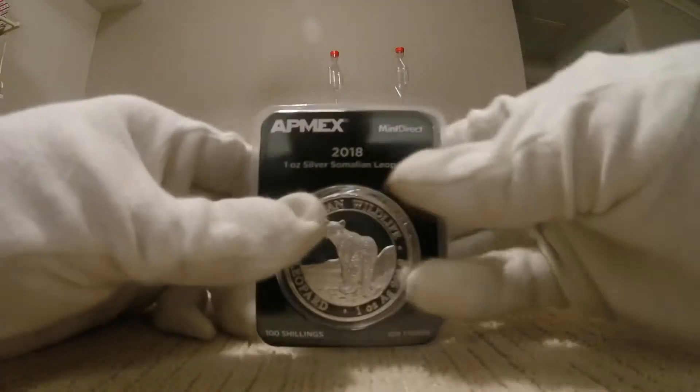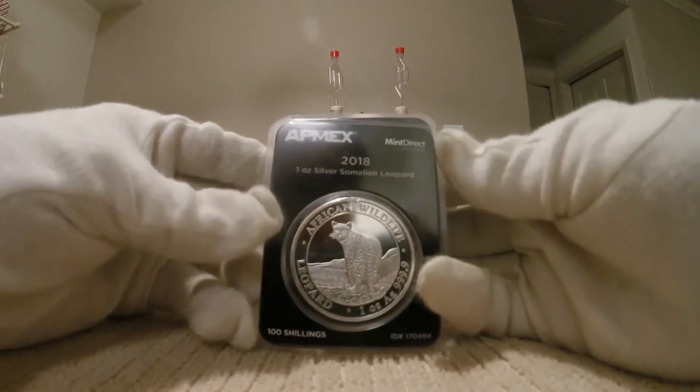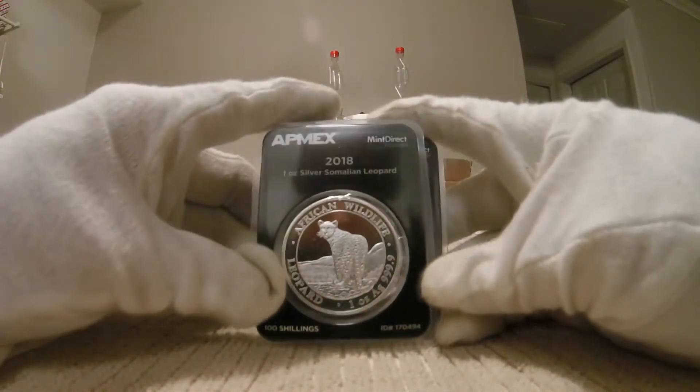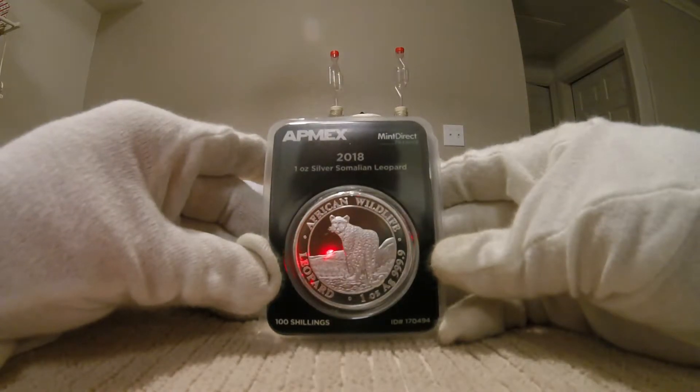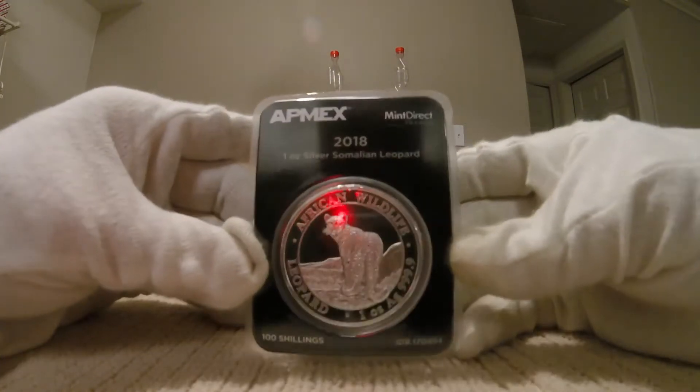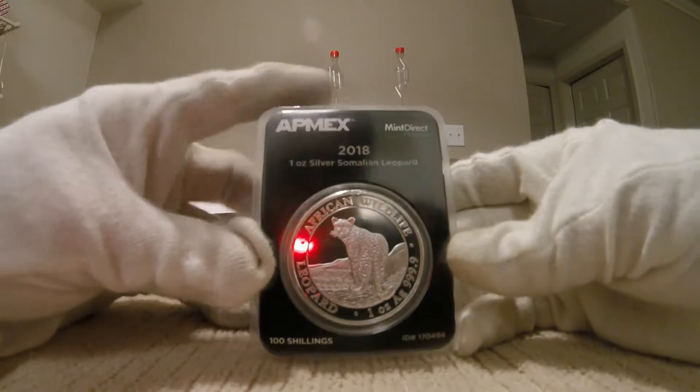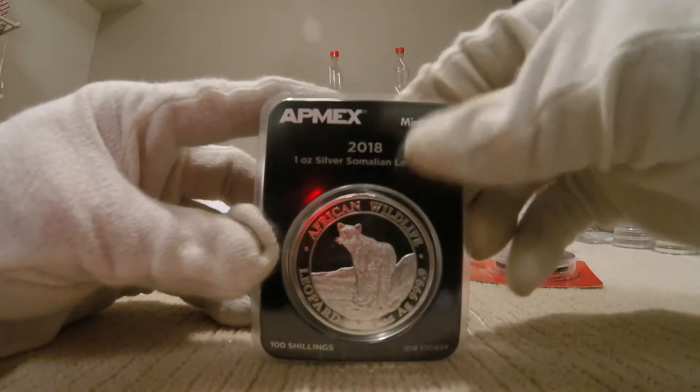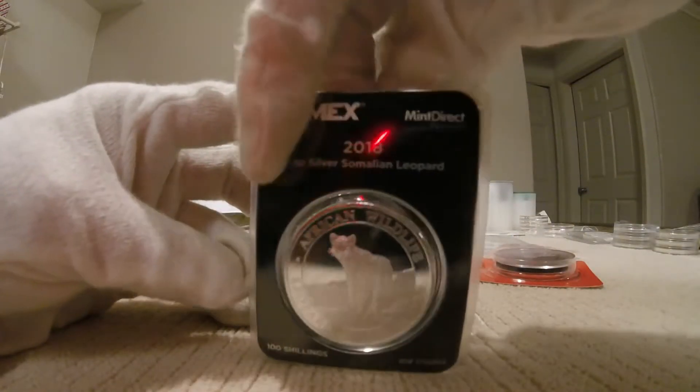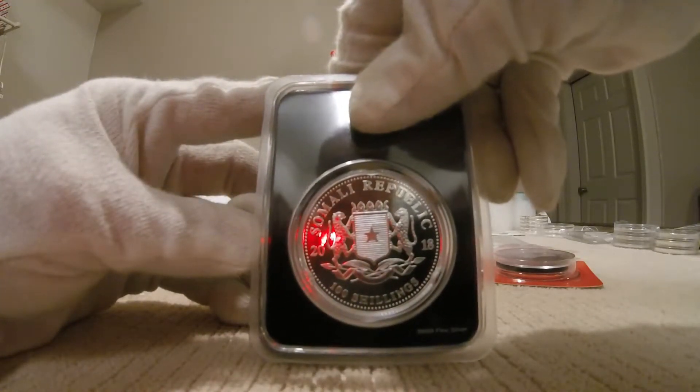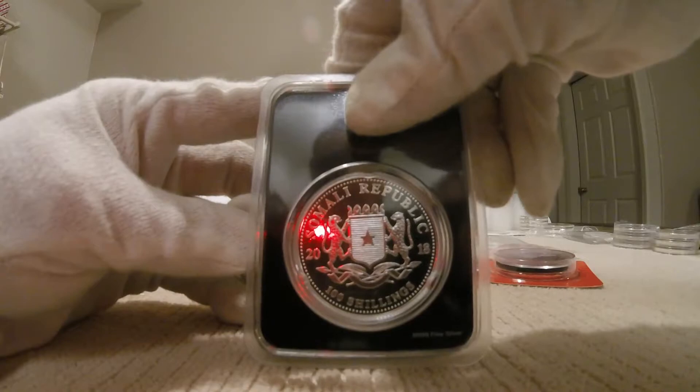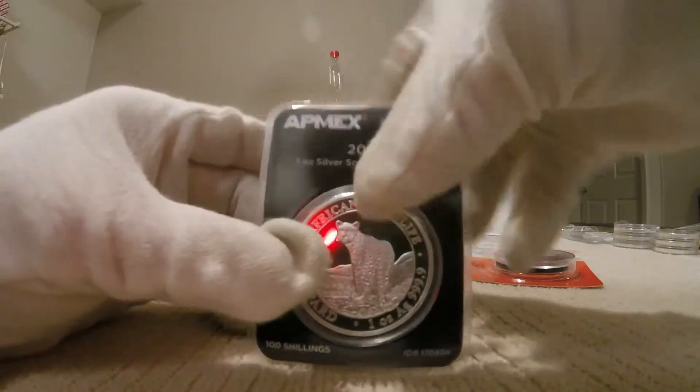This is a new series. If you've seen the elephants, they're made by the same mint. So we've got the African Wild Leopard. And these are in the premier Apmex container. 100 shillings. Very cool. So there's five of those.